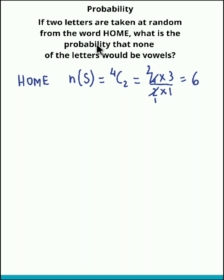Now the question is: what is the probability that none of the letters would be vowels? So suppose we consider event A, such that none of the letters, that is the two selected letters, are vowels.